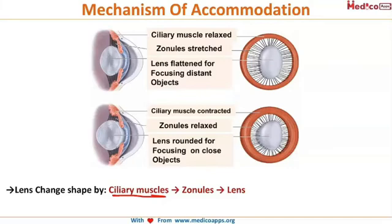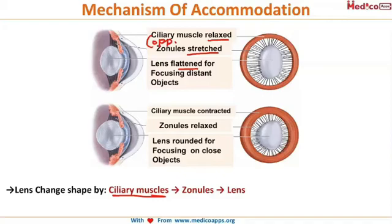If the ciliary muscle is relaxed, the zonules are stretched. When the zonules stretch, the lens also stretches with the zonules and becomes flattened, helping in focusing objects that are far away. So when the ciliary muscle is relaxed, the zonules stretch — their actions are always opposite — and when the zonules are stretched, the lens flattens and focuses distant objects.